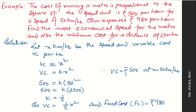We want to find out the minimum cost. Cost is a combination of variable cost and fixed cost. Let X km per hour be the speed and VC be the variable cost per hour.